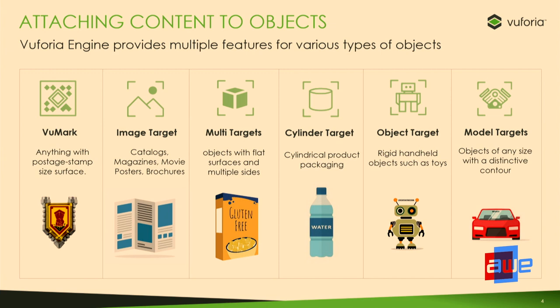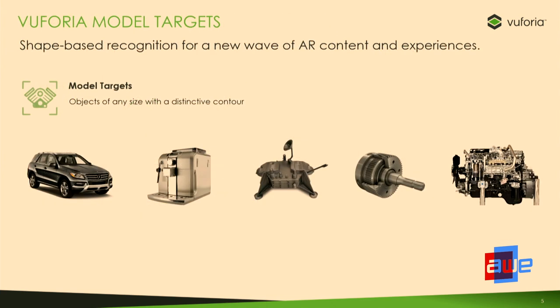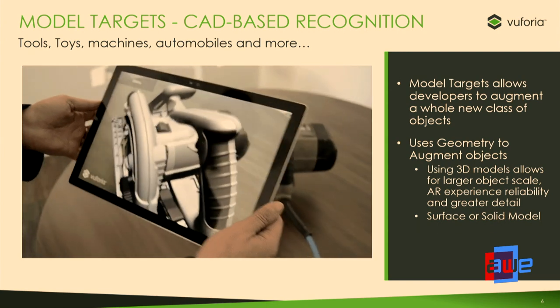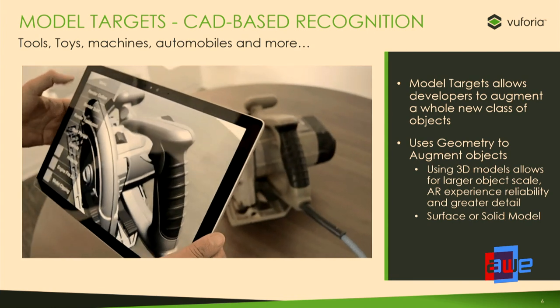But what about objects that don't have a lot of intricate visual detail? Cars have been notoriously tricky to augment with their reflective surfaces and transparent glass. Consumer appliances are made for specific function, not with augmented reality in mind. 3D printing is becoming incredibly popular for prototyping, and people want to bring those prototypes to life using AR. Industrial equipment — engines, motors — has traditionally been really tricky to augment. That's why, last year, V4 introduced model targets, which allows us to put content onto a whole new class of objects.